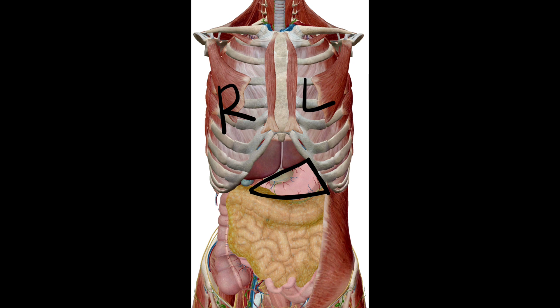Its boundaries are: on the left side, left costal margin; on the right side, lower border of liver; and inferiorly by transverse colon. This gastric triangle is the triangular area of stomach, and it lies in contact with the anterior abdominal wall.